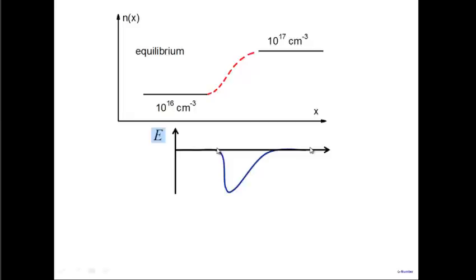What actually happens is that the electron density profile transitions gradually from 10^16 to 10^17, and correspondingly the electric field builds up gradually from zero, peaks somewhere in between, and returns to zero — with no abrupt changes anywhere, since dE/dx cannot be infinite without a sheet charge.